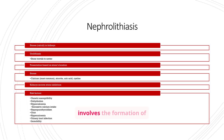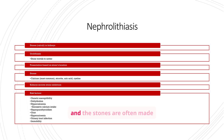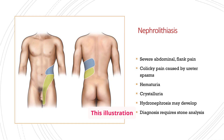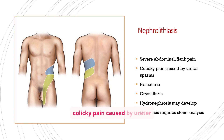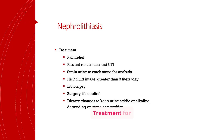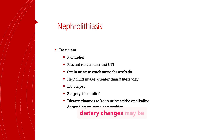Nephrolithiasis, or kidney stones, involves the formation of calculi in the kidneys. These stones can travel to the ureter, causing urolithiasis. The presentation depends on the stone's location, and the stones are often made of calcium, but can also be struvite, uric acid, or cysteine. Patients often experience severe abdominal and flank pain, as well as colicky pain caused by ureter spasms. Hematuria and crystalluria are also common findings. Treatment focuses on pain relief, preventing recurrence and UTI, and analyzing stone composition. High fluid intake, lithotripsy, surgery, and dietary changes may be necessary. Straining urine to catch the stone for analysis is also important.